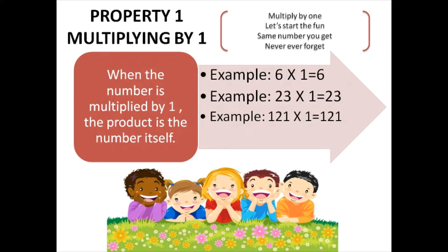For example, six times one is six. Twenty-three times one is twenty-three. One hundred and twenty-one times one is one hundred and twenty-one. Let's go to property number two.